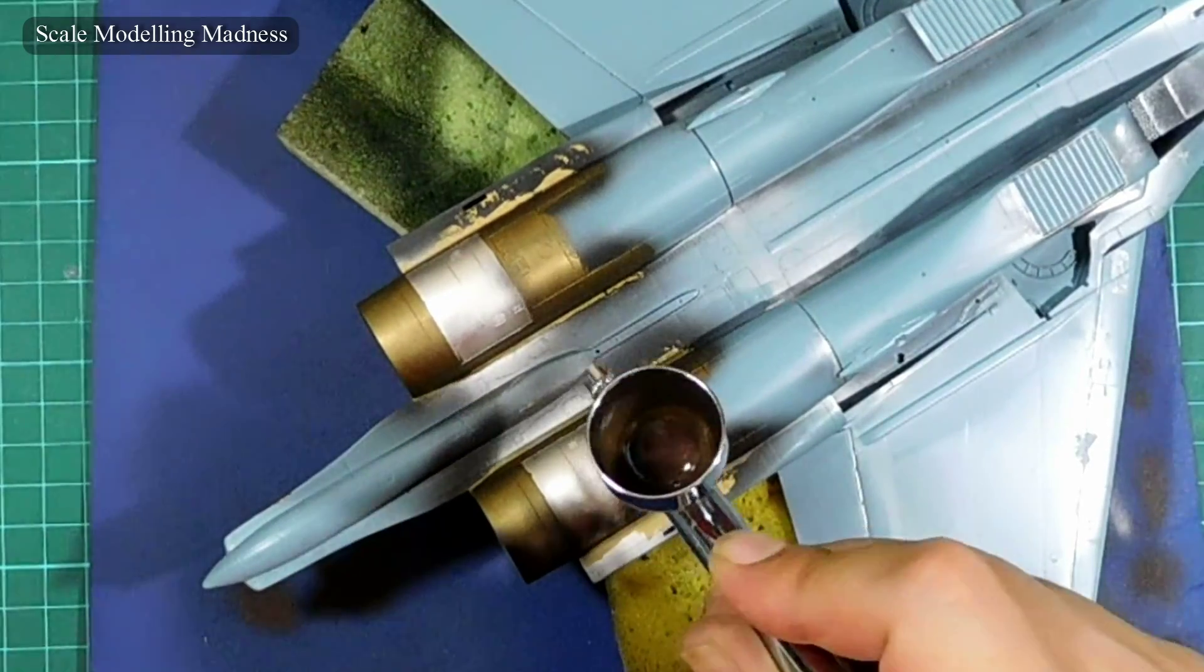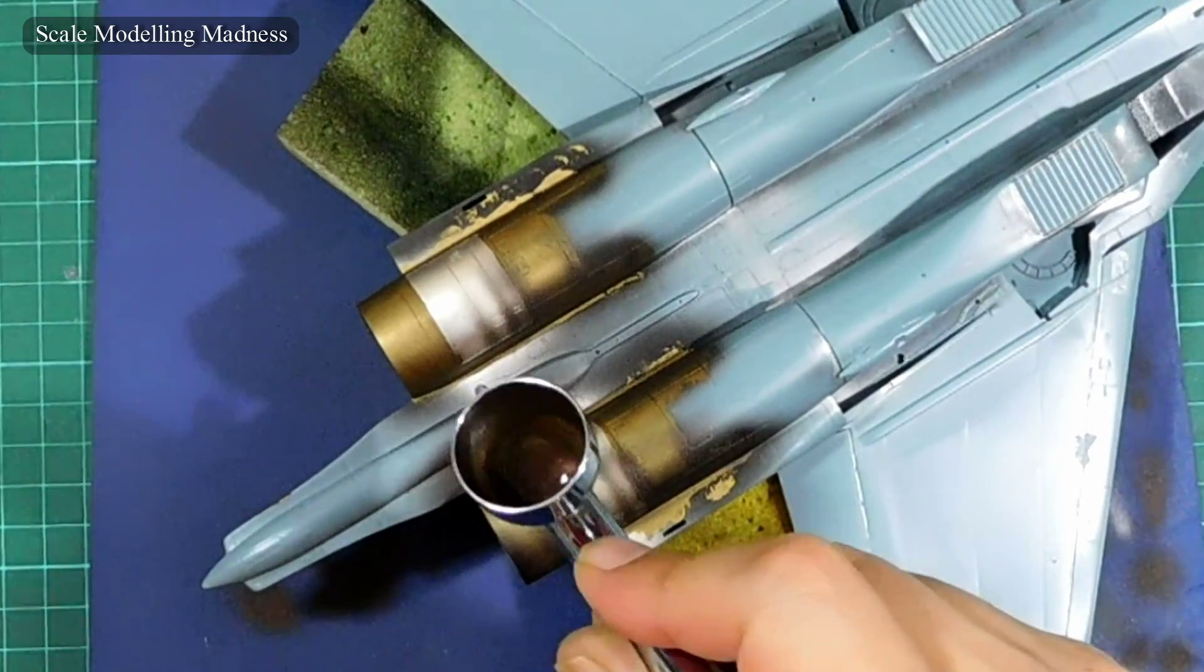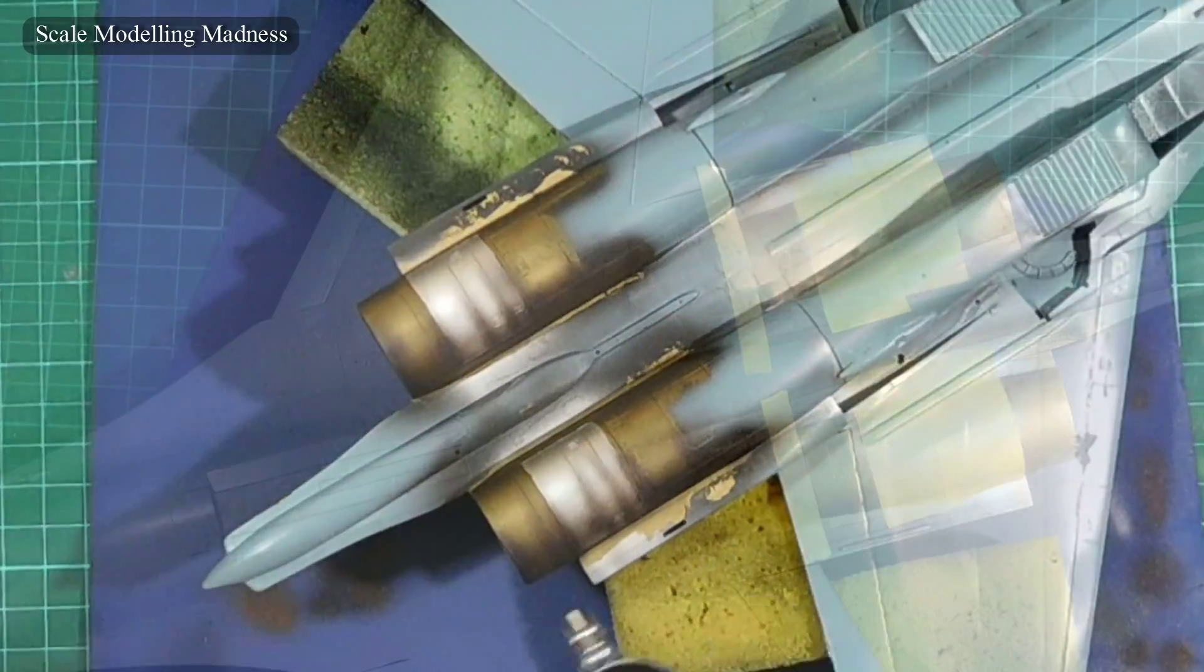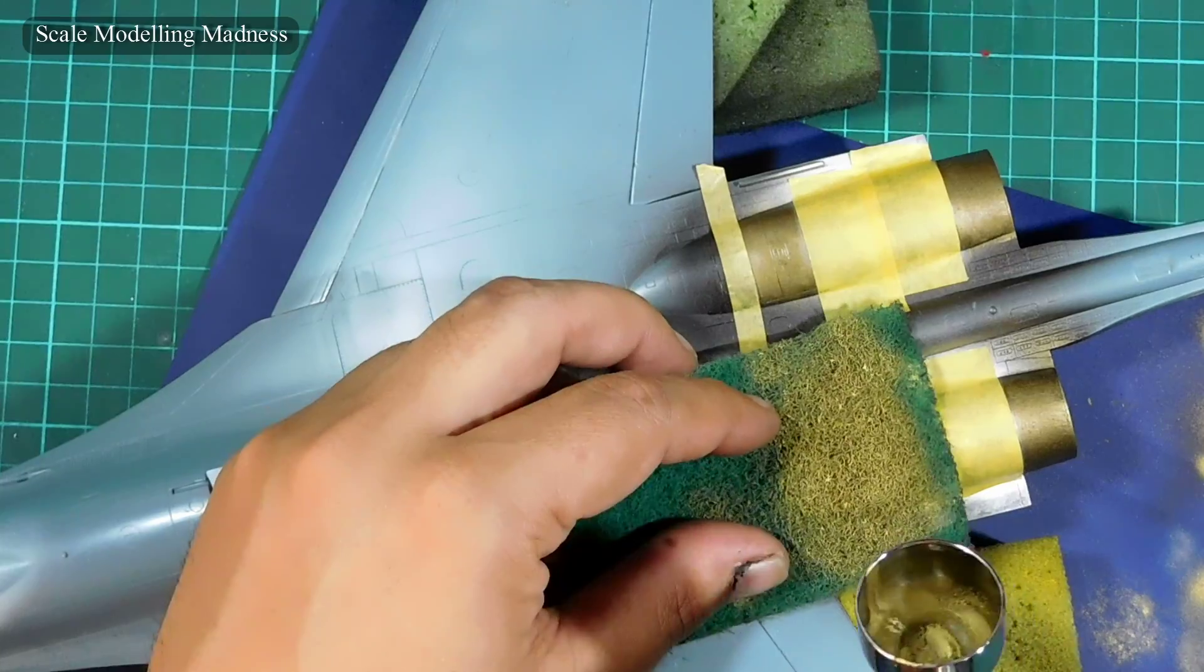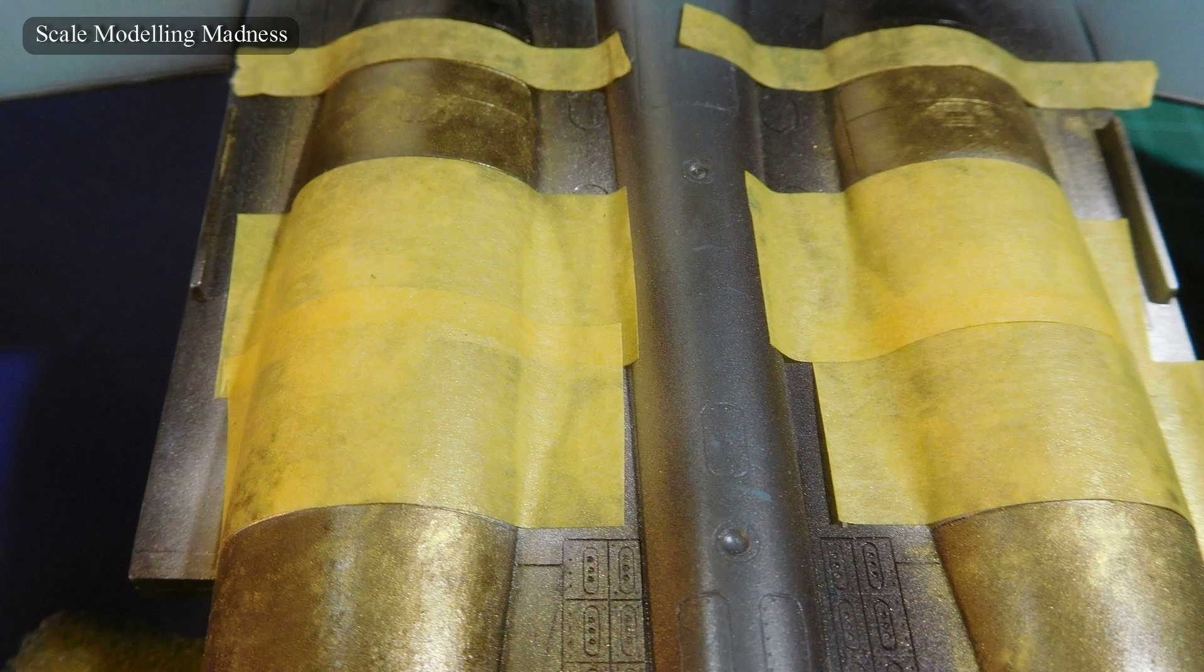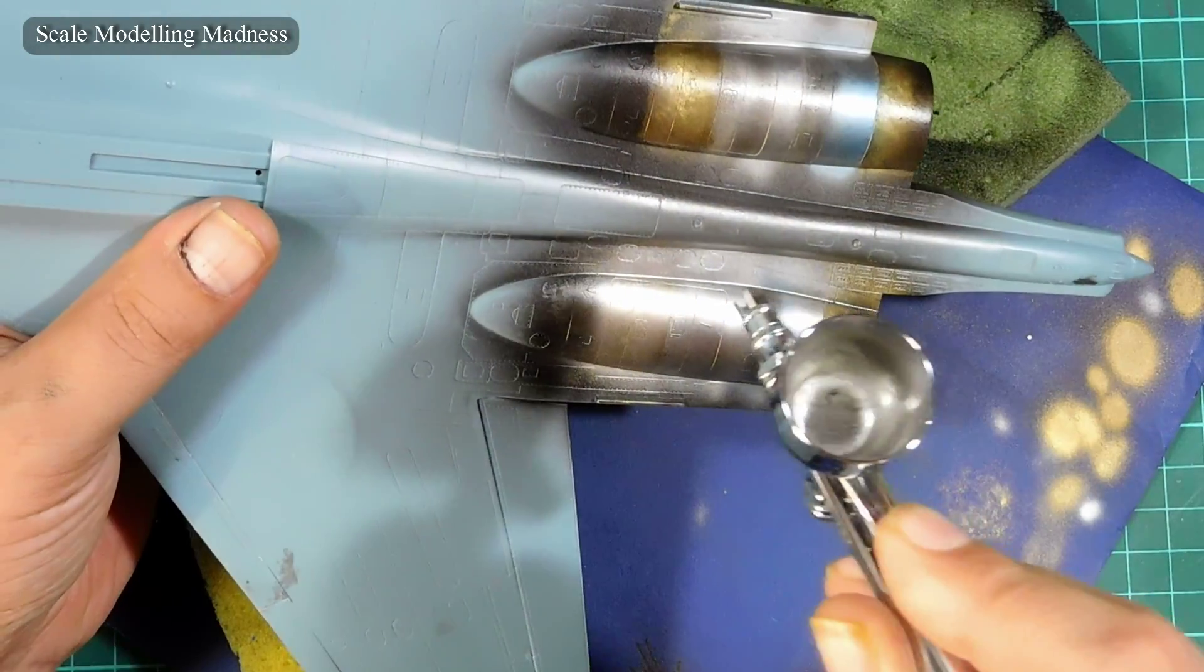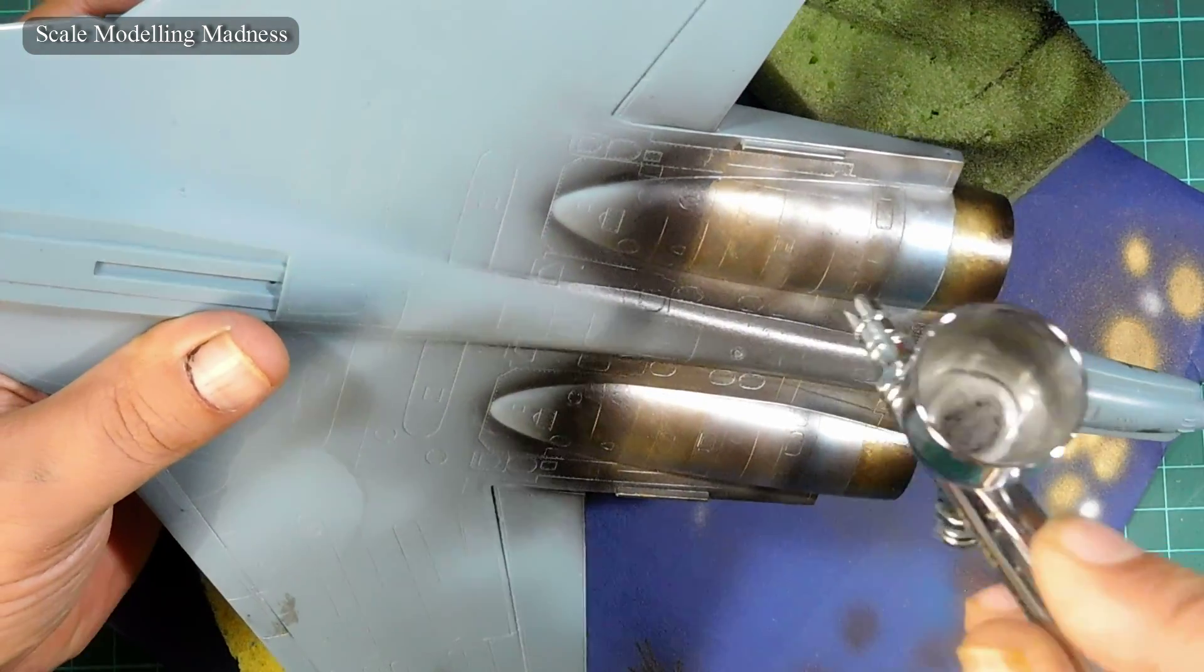Next, I added some burnt metal over the panel lines. I tore the hard part of a sponge, and I sprayed some brass and copper through this, for some patches and corrugation. And this is what I got.